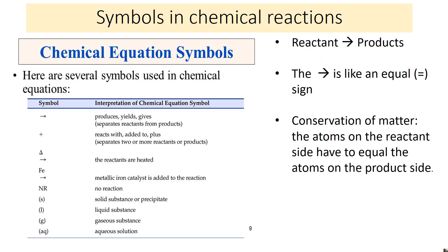Symbols used in chemical reactions: The first one is the arrow. The arrow separates the reactants and the products — it's like the equal sign in a math equation, and it's read as 'yields' or 'produces.' The plus sign separates reactants from other reactants, so if you have two reactants they'll be separated by a plus.